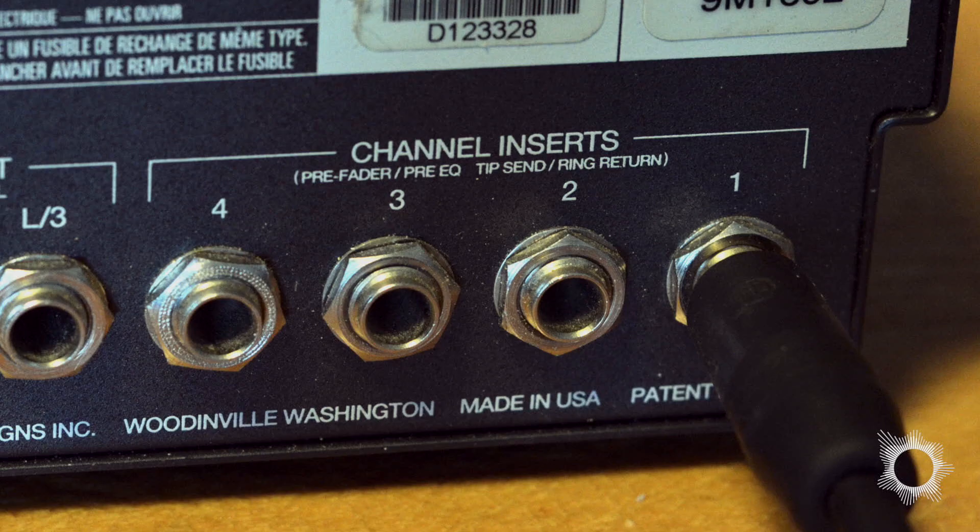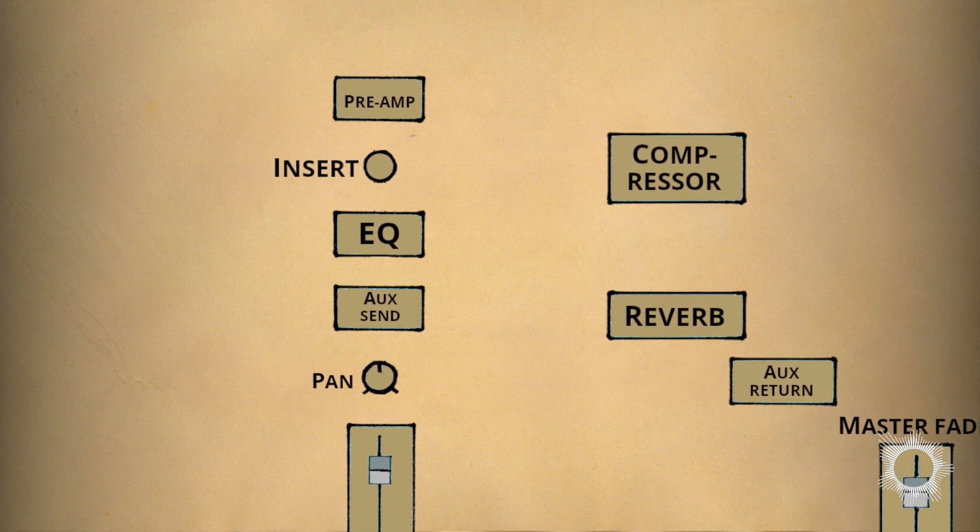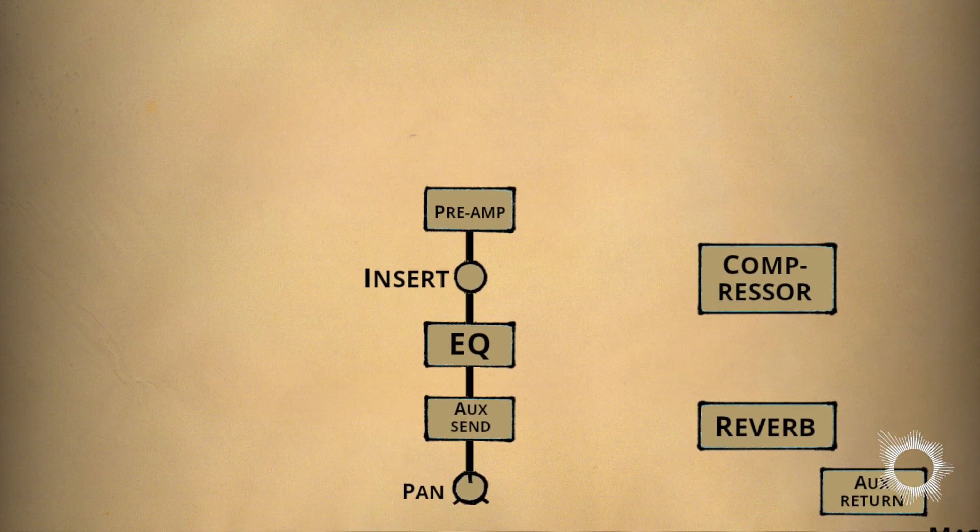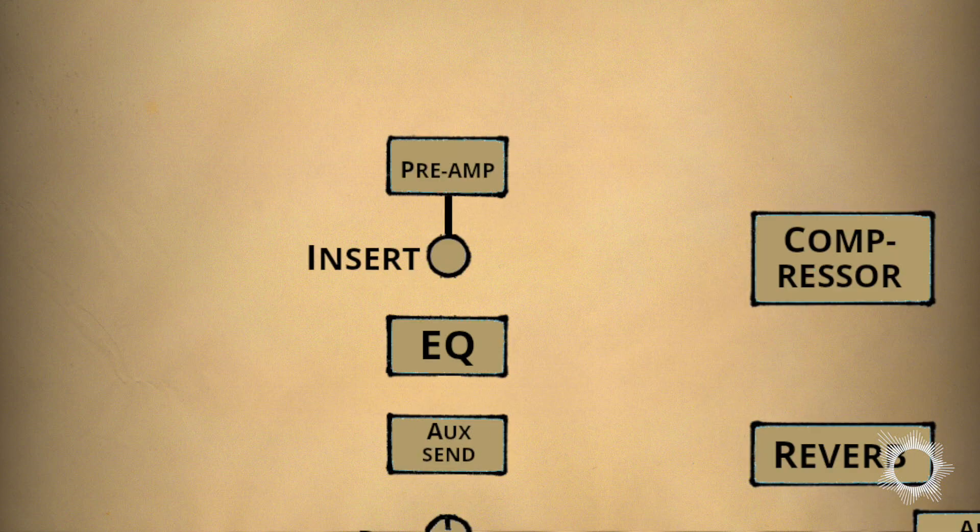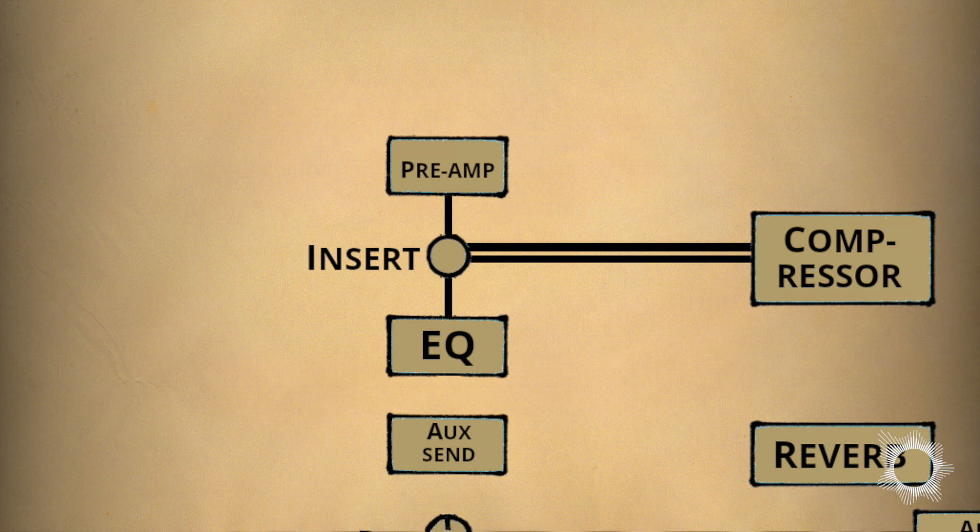After that comes an insert point, commonly used are dynamics processors like compressors and gates. It'll cut off the signal completely, send it to a device for manipulation, and back to the same point where it continues on to the equalizer for further tone shaping.